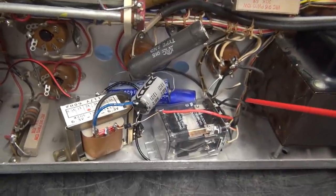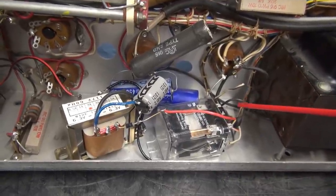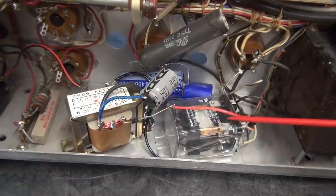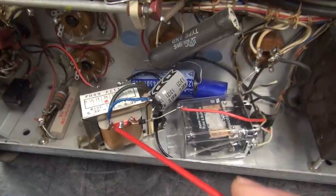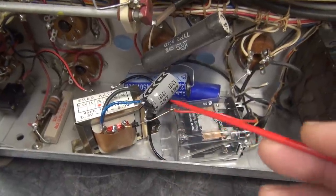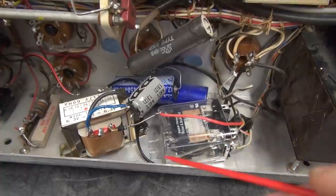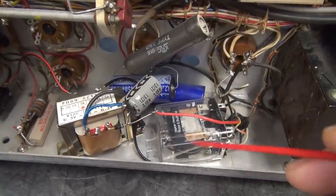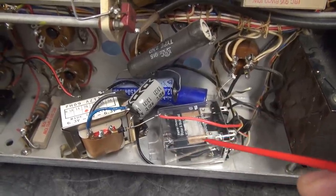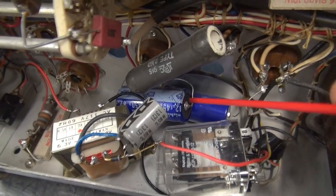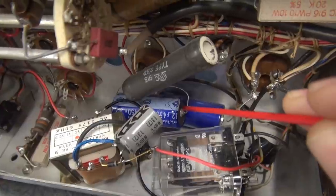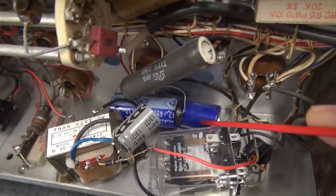Obviously at one time the original keying relay failed in this Valiant, so somebody instead of finding that relay added this. So we have an AC power transformer, little cap flying in the breeze, and an ice cube relay. So that guy provides 12 volts to key this relay. It does something else I'll show you in a minute.